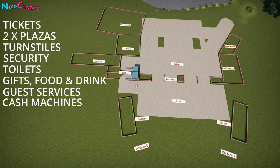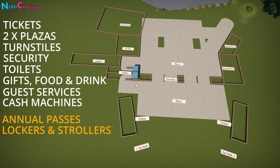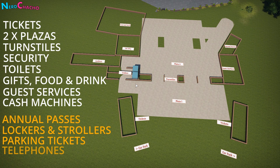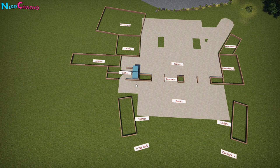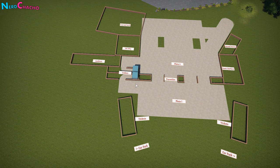There's also optional stuff: somewhere to buy annual passes, somewhere to rent lockers and strollers, parking tickets, telephones — remember not everybody has a mobile phone — and somewhere to buy fast passes, typically found in guest services or where you find annual passes, but you could include a separate shop. Remember your plaza area needs to be an appropriate size for the number of guests you'll have, as this area is used by every single person entering and leaving your park at least twice a day, so paths need to be wide.